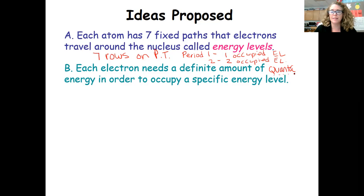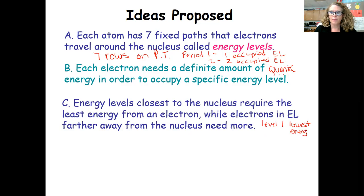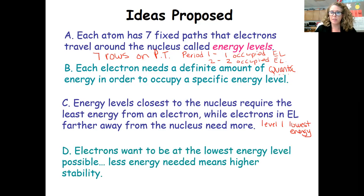Anytime the prefix 'quant' appears it has something to do with numbers — a quanta of energy is required to occupy a specific energy level. The energy levels closest to the nucleus require the least energy; electrons further away need more energy. So level one is the lowest energy. We add electrons in order from least to most energy, starting at level one up through level seven. Electrons want to be at the lowest energy level — really this has to do with stability, as lower energy means higher stability.